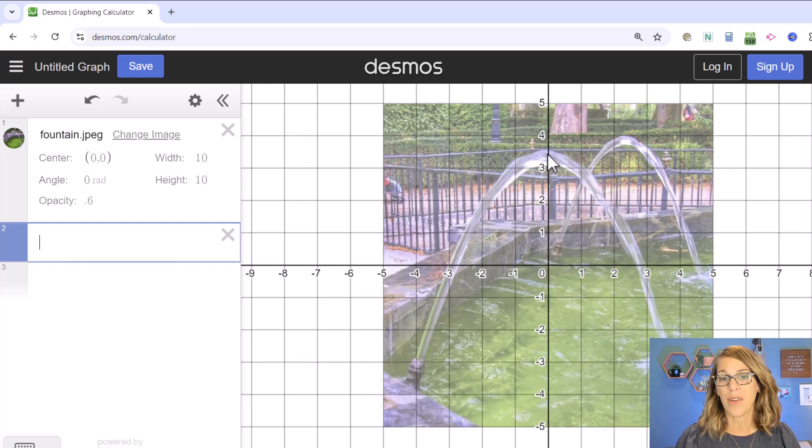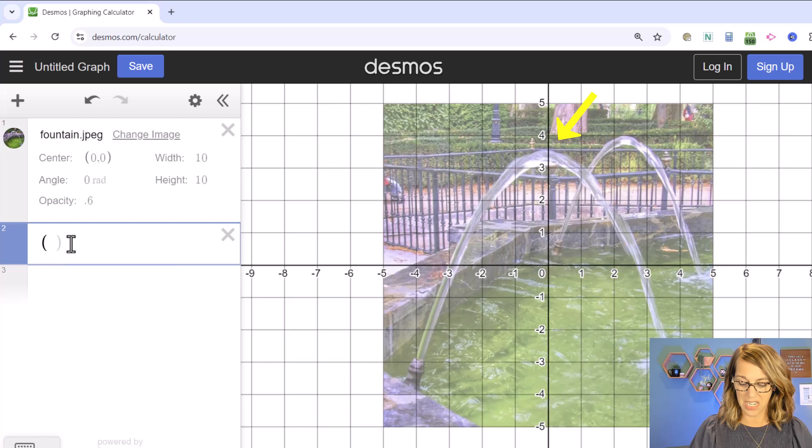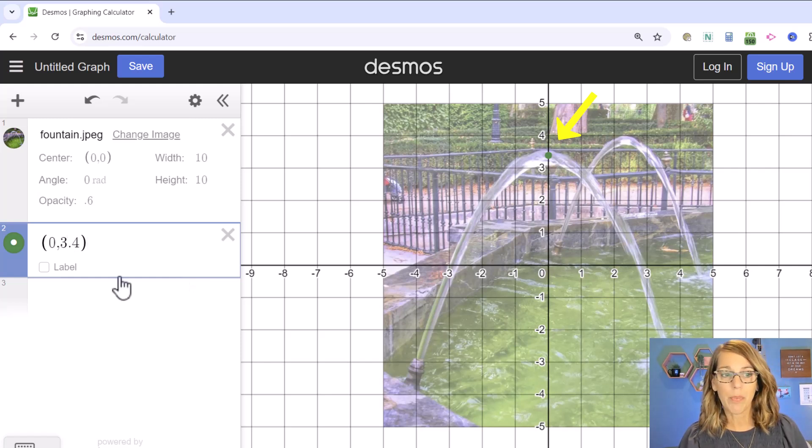Now back to Desmos, I noticed that I've got my vertex up here at about, and I can even type it in just to see, 0 comma maybe 3.4 and that actually looks pretty close. Maybe it's more like 3.3.